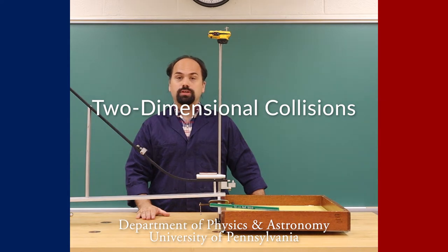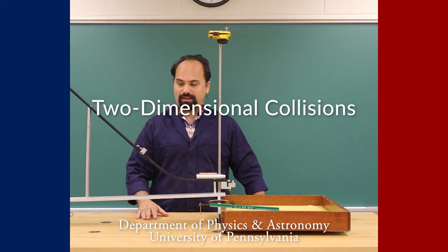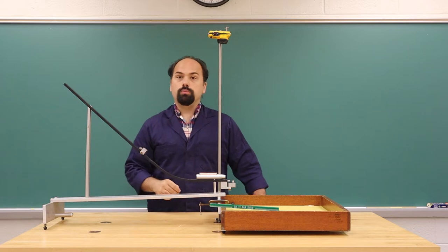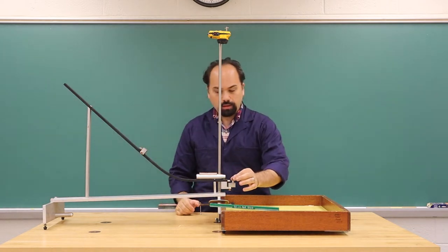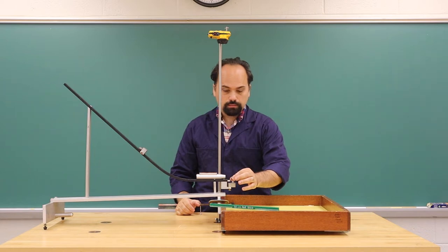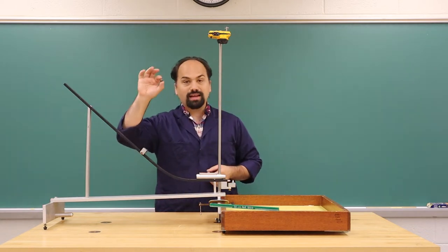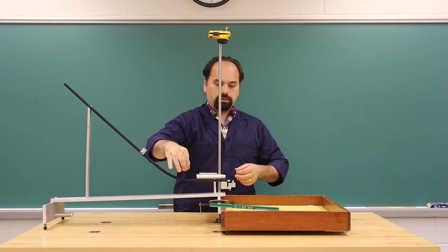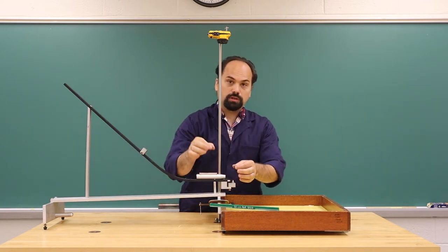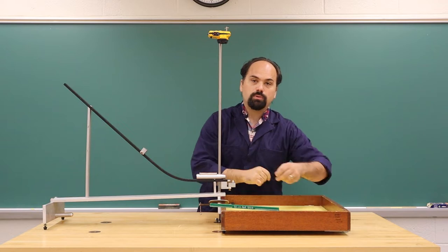Two-dimensional collisions. In this lab, you will be taking a ball and bouncing it right here on a tee, and then taking a second identical ball, rolling it down the ramp so that it collides with the first, and they both continue out in that motion.